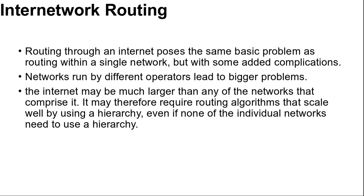Networks run by different operators lead to bigger problems. The operators may have different ideas about what is a good path through the network — one operator may want the route with the least delay, while another may want the most inexpensive route. This leads operators to use different quantities to set the shortest path cost, so the weights will not be comparable across networks and the shortest path on the internet will not be well defined.